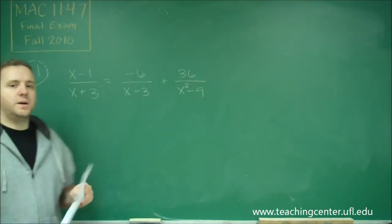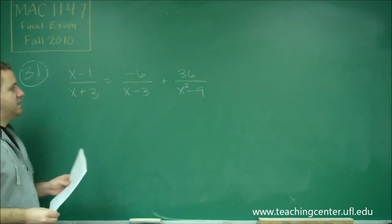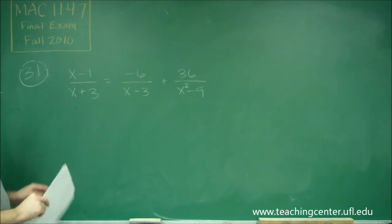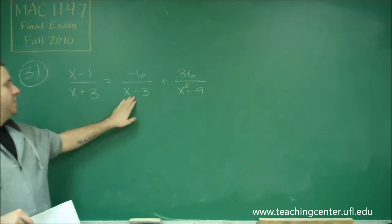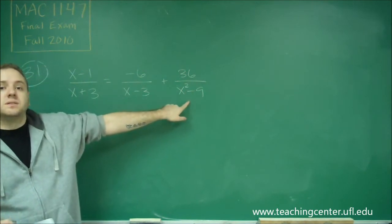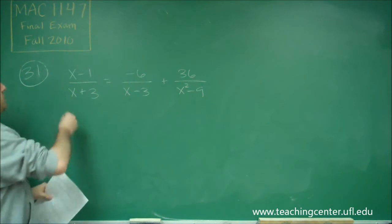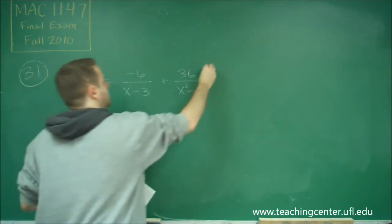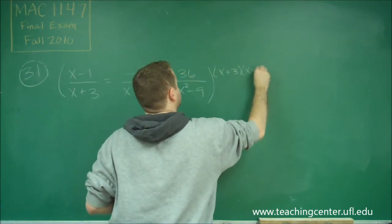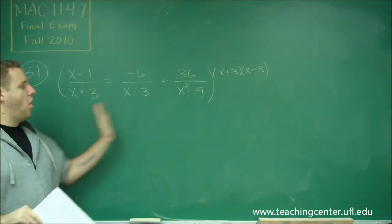So the best way to go about solving these problems is to get rid of all the denominators. And in this case, that's actually relatively easy because x plus 3 and x minus 3 are factors of x squared minus 9, because this is a difference of two squares. That is x plus 3 times x minus 3. So if we multiply this entire equation by x plus 3 and x minus 3, that would get rid of all of the denominators.